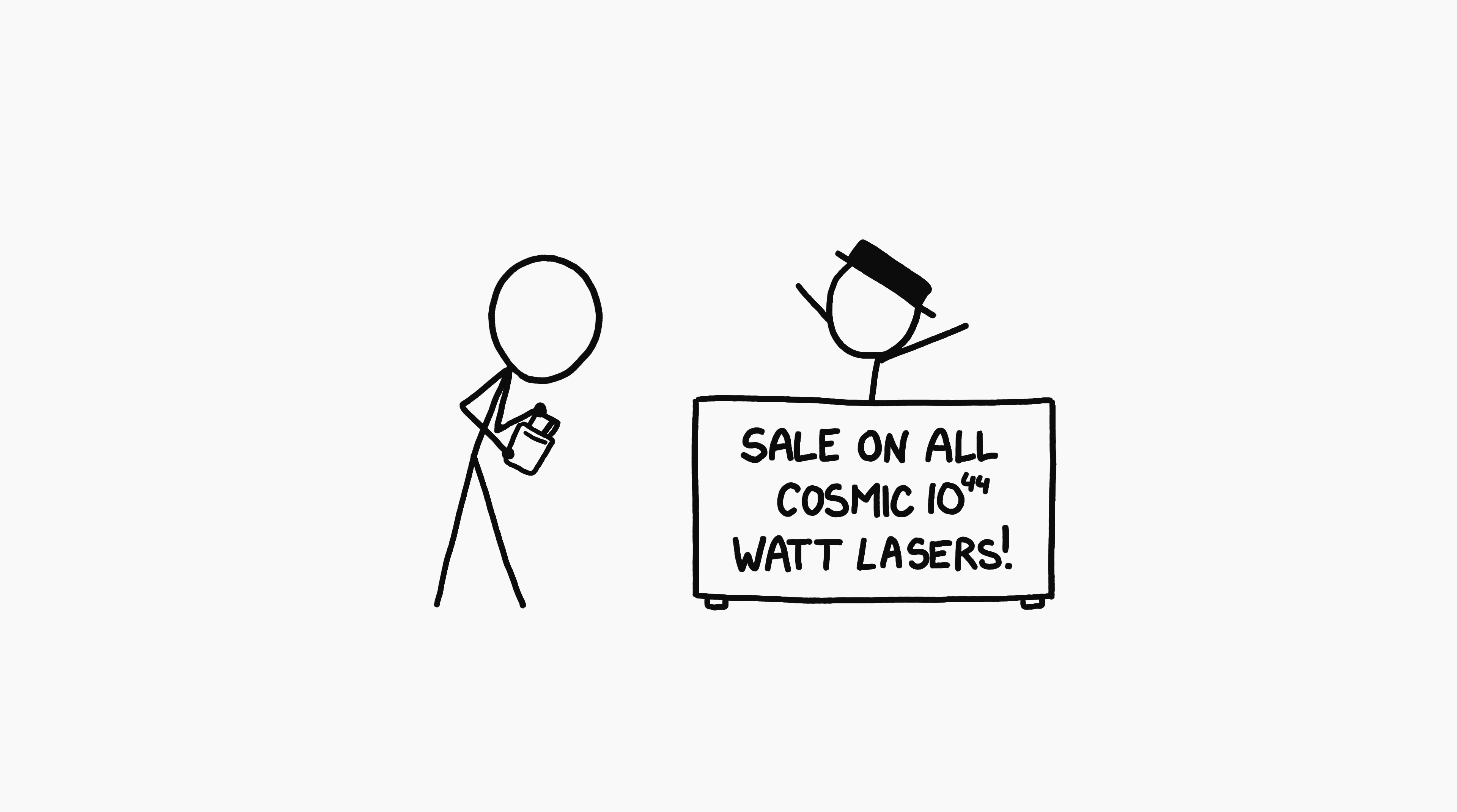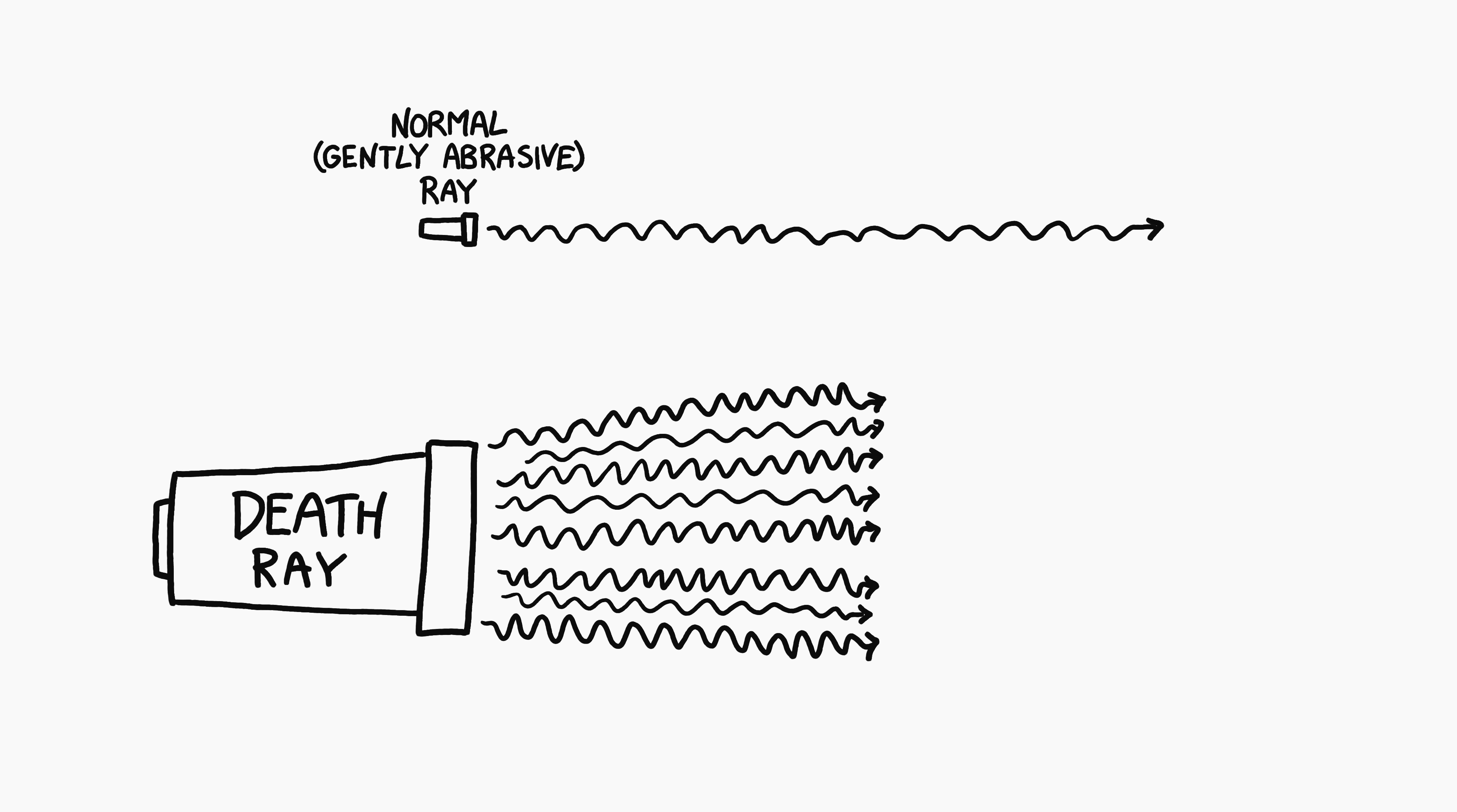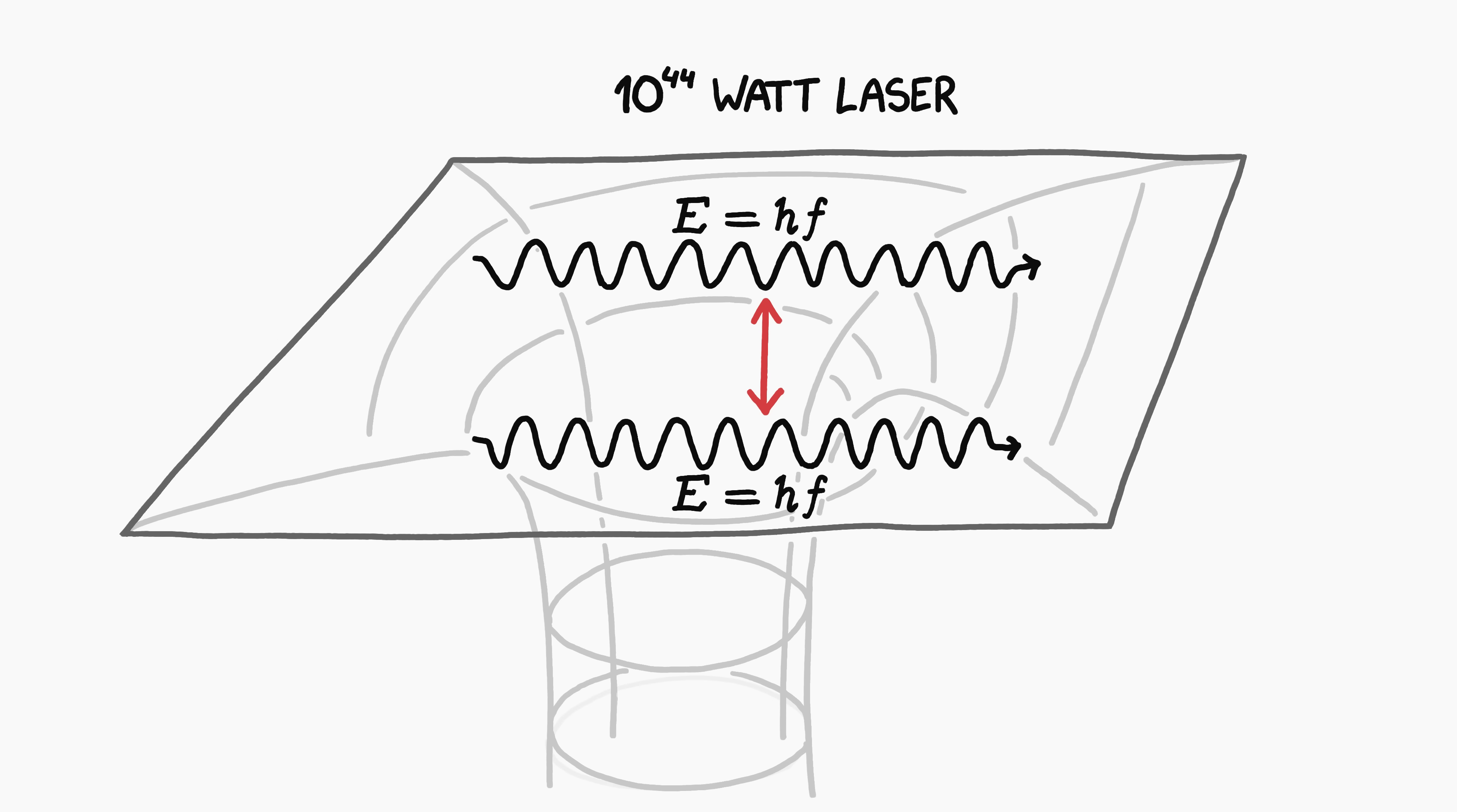But don't rush out to buy a 10 to the 44 watt laser just yet. At cosmic energy scales, normal optics breaks down. For example, if a beam is powerful enough, it could exert a gravitational pull on itself. Photons carry energy, and energy creates gravitational fields. For normal light beams, this is negligible. But for a 10 to the 44 watt laser the size of the Earth, photons on the outer edge would experience an acceleration of over 10 g's toward the beam centerline.